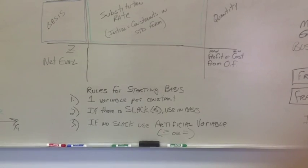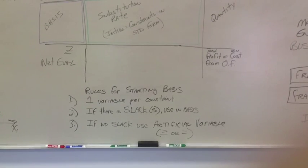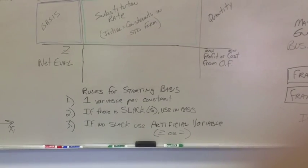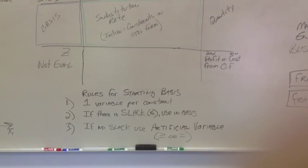Alright, so that's the first one, one variable per constraint. The second one, if there's slack, it goes in the basis. So we start with our S variable there for slack. Again, that's less than or equal to.